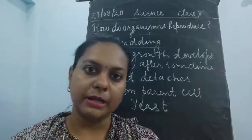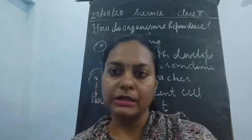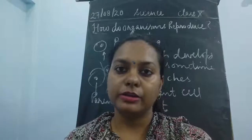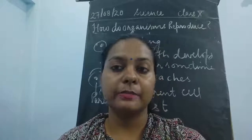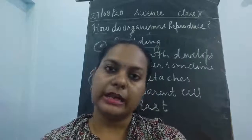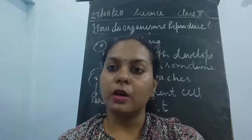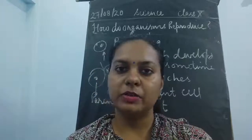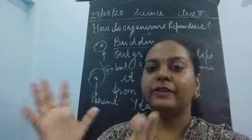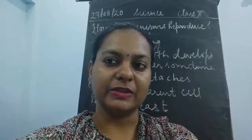In today's class, we studied both forms of fission: binary fission, where one organism divides into two parts, and multiple fission, where one organism breaks into several daughter cells. Binary fission takes place in unicellular organisms like amoeba, while multiple fission takes place in Plasmodium. That's all for today's video — I'll meet you in the next video with the next topic.